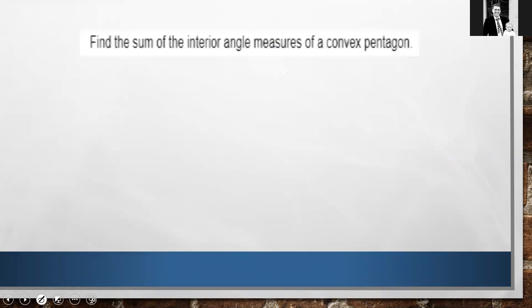So let's look at this example. It says, find the sum of the interior angles for a convex pentagon. So pentagon, that's five sides. So what we're going to do is we're going to take our five minus two and multiply that by 180. That is going to give us 540 degrees. So the sum of the interior angles for a convex pentagon is 540.